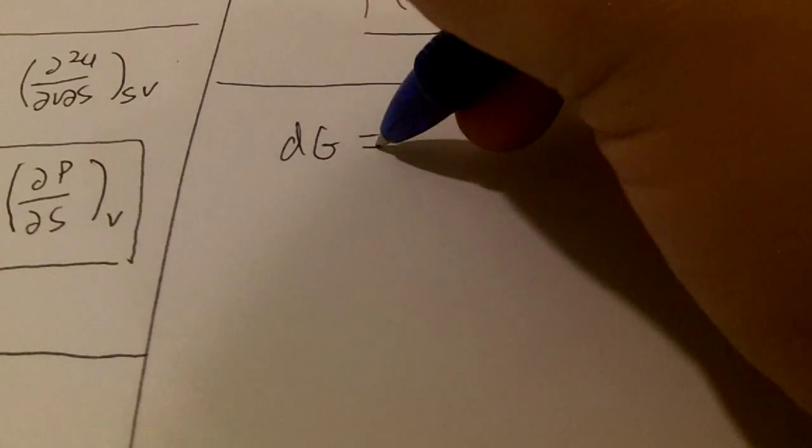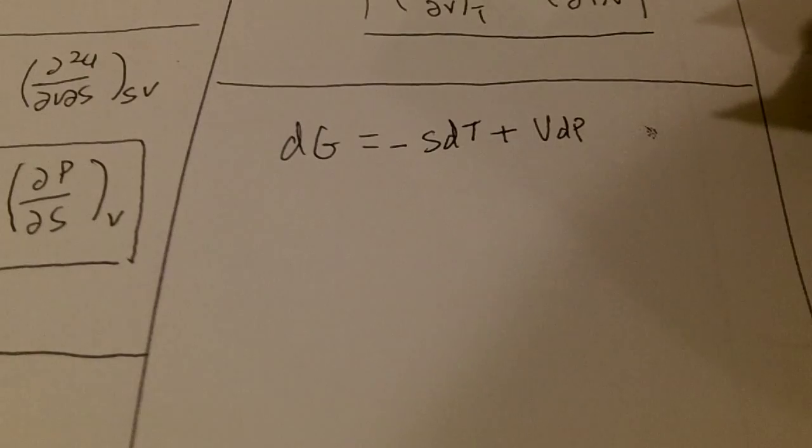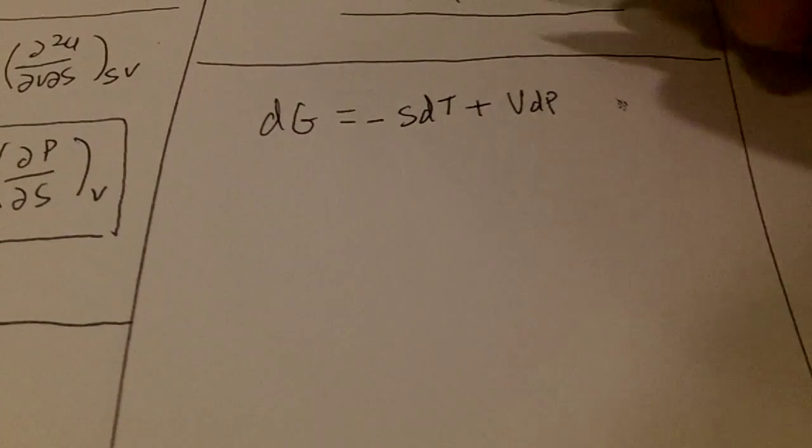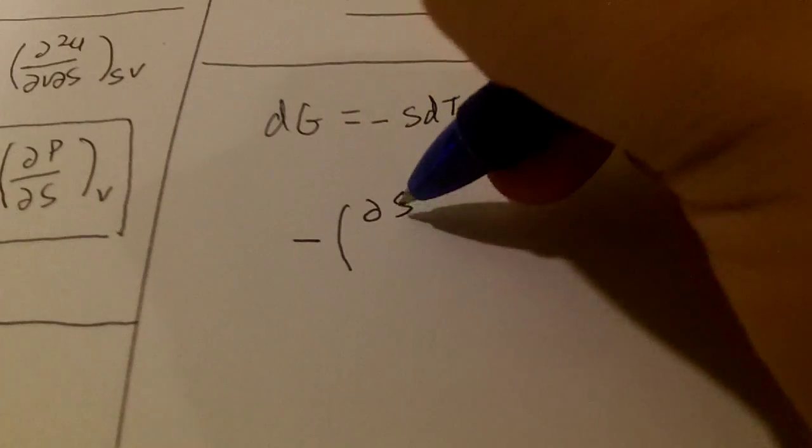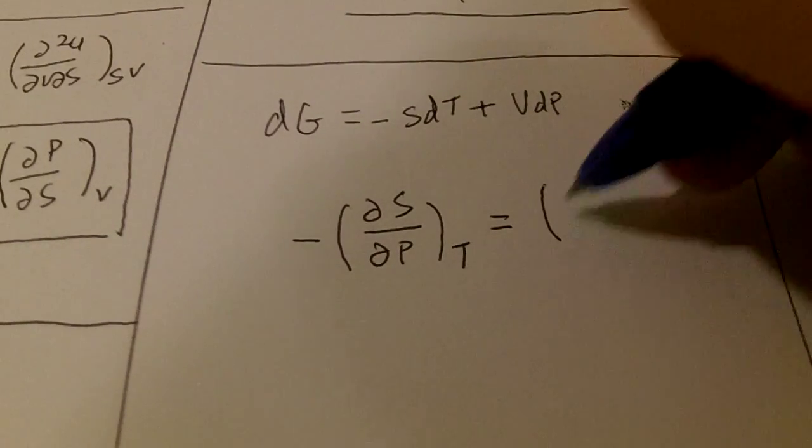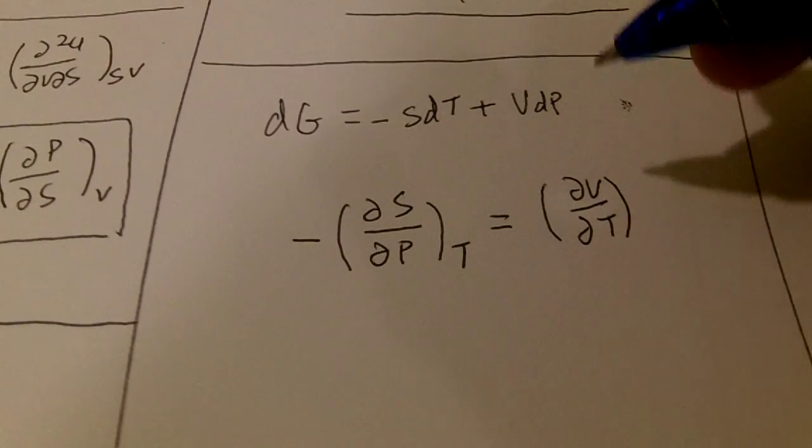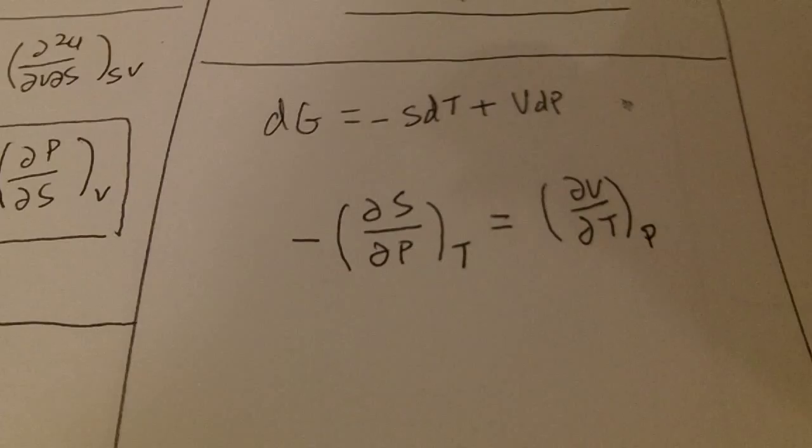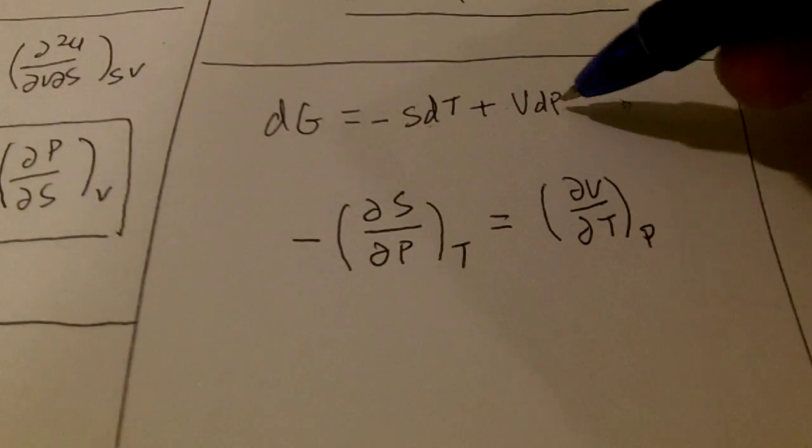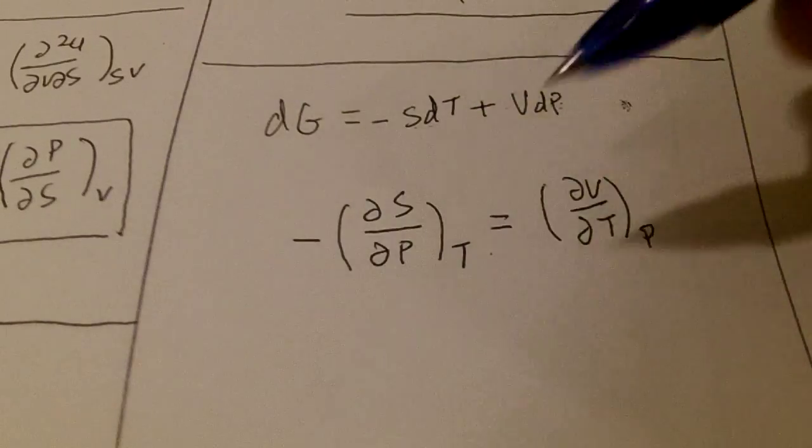And lastly we have Gibbs free energy. And what do we do? Del S, we have a negative, del S del P T, equals to del V del T, keep P constant. And negative del S del P, keep T constant. Both are the same.